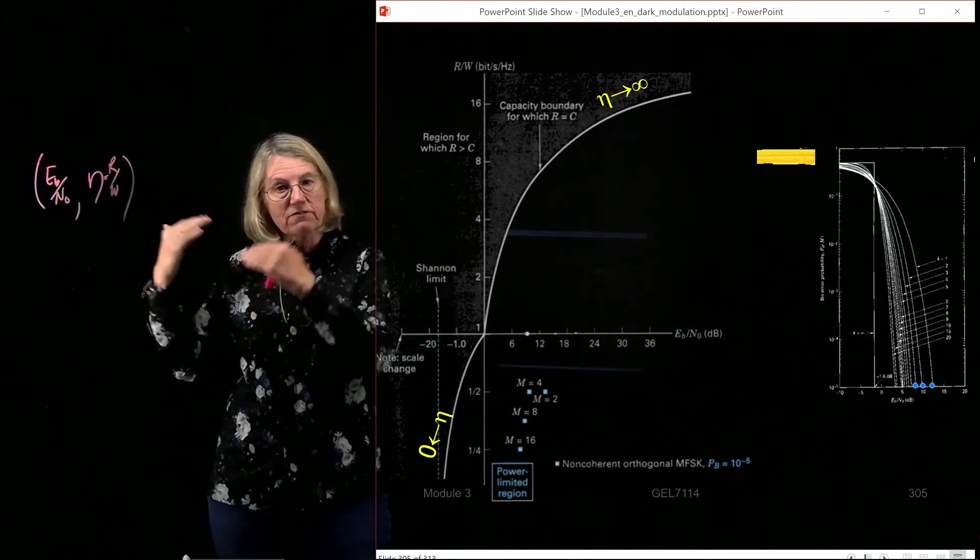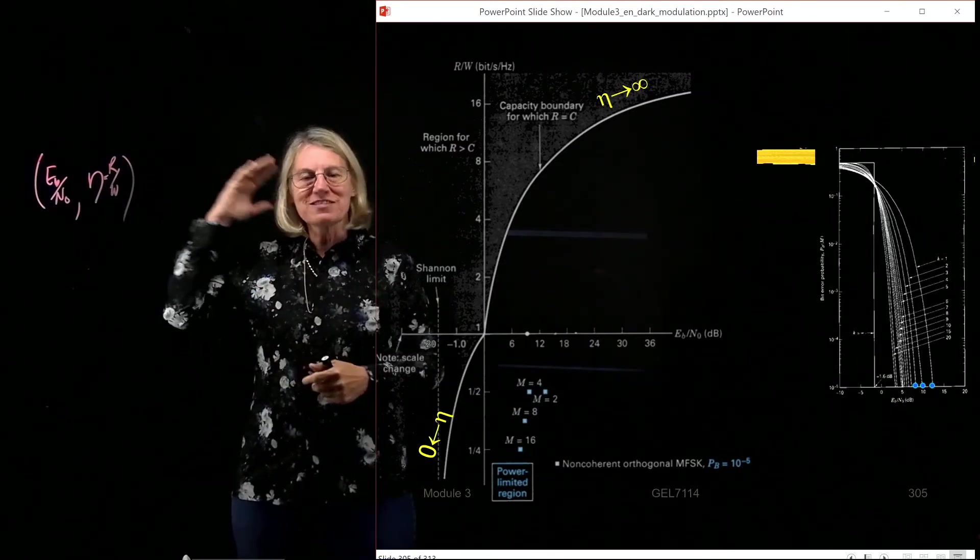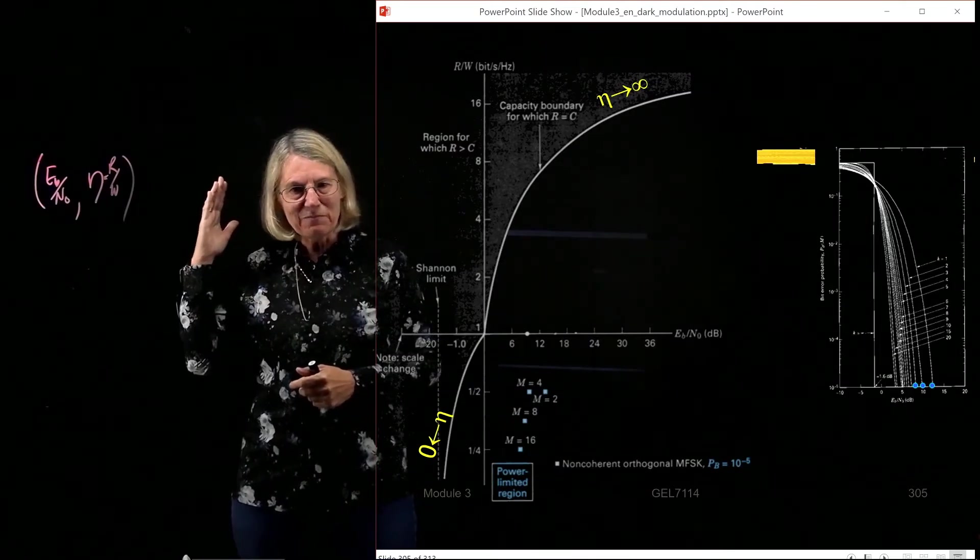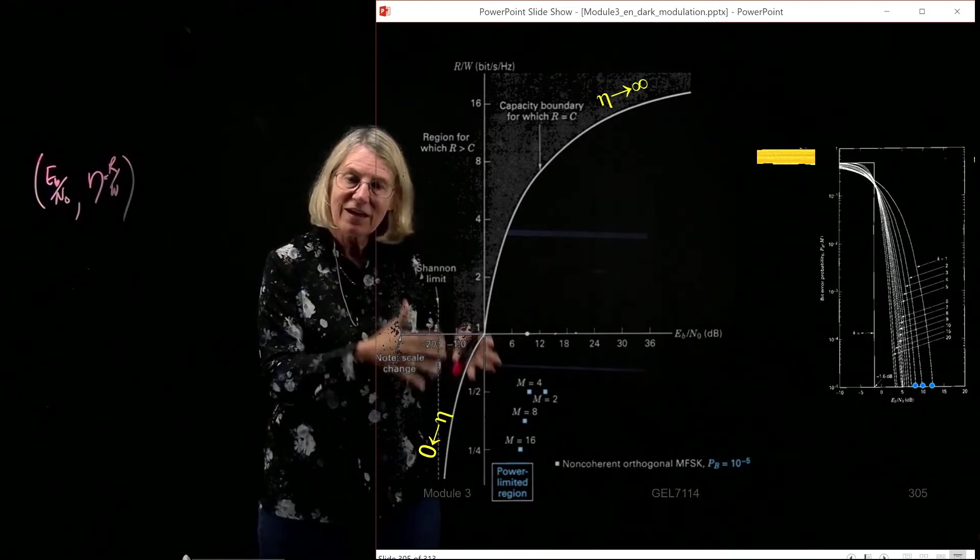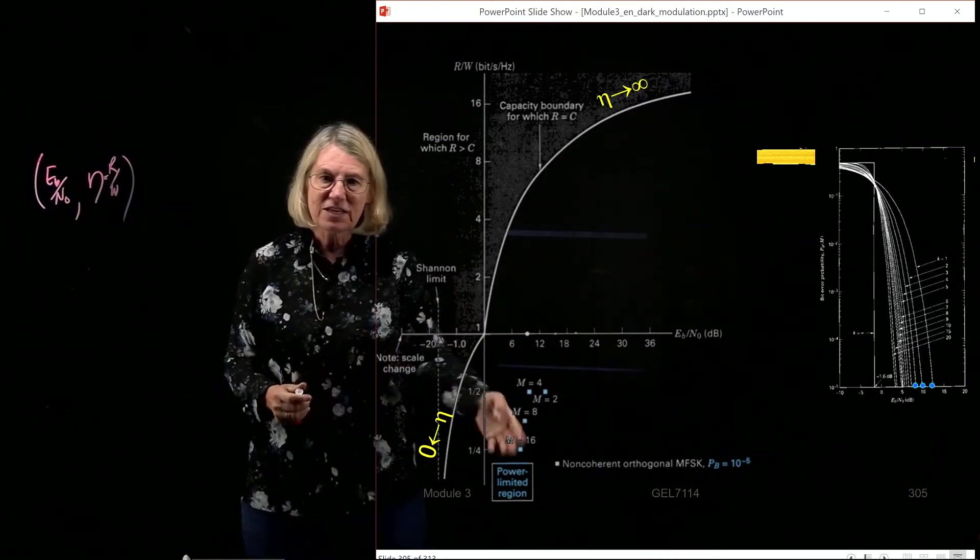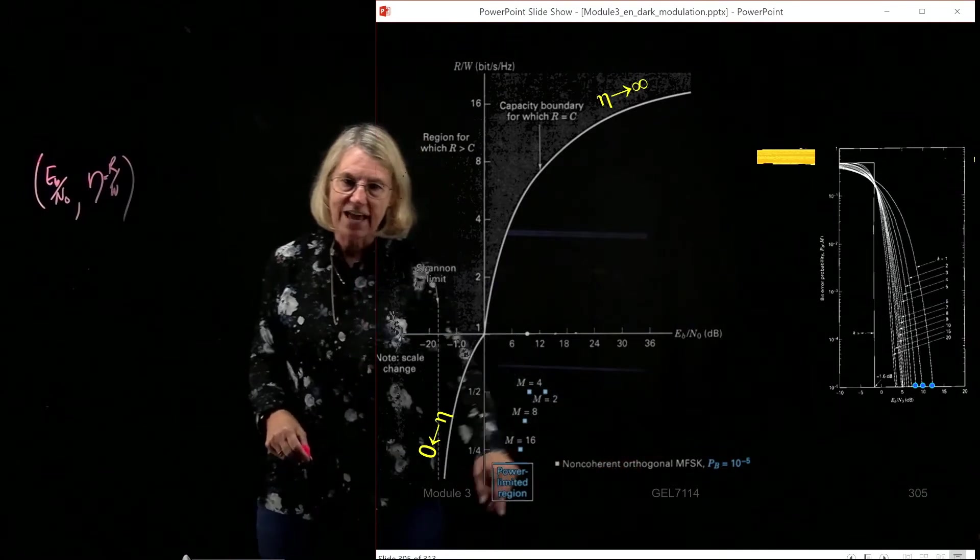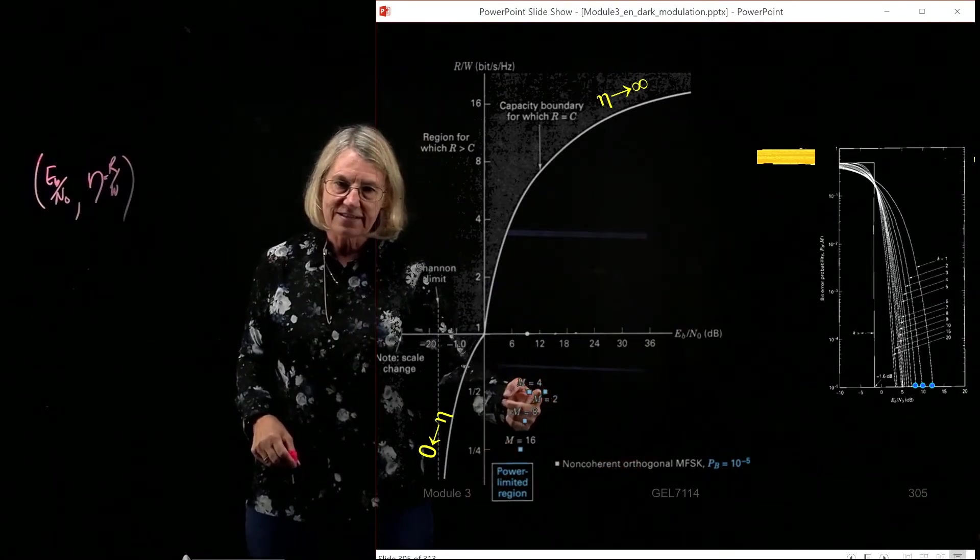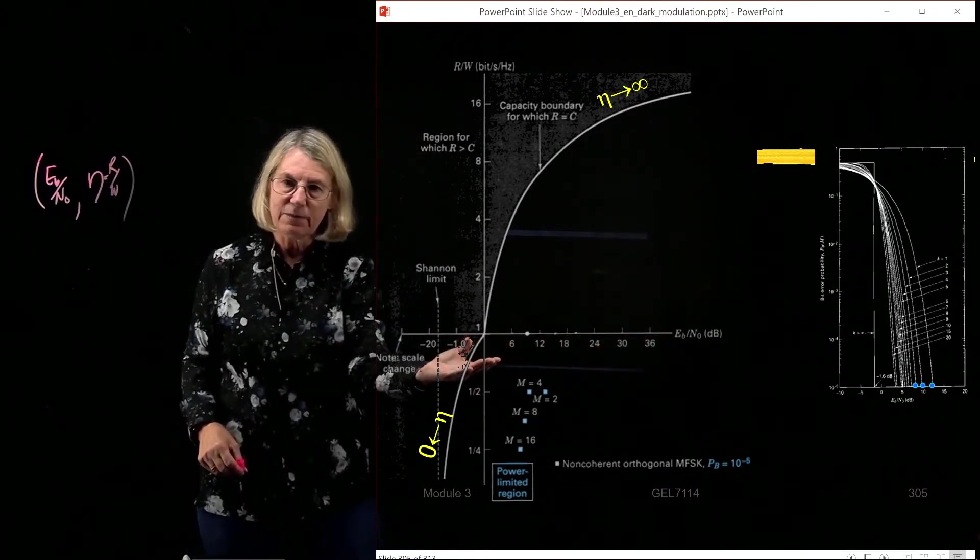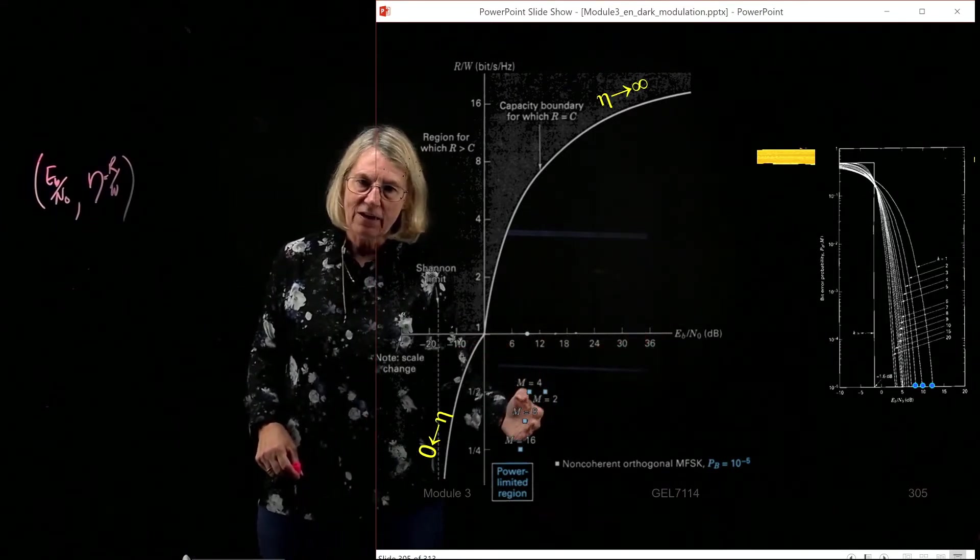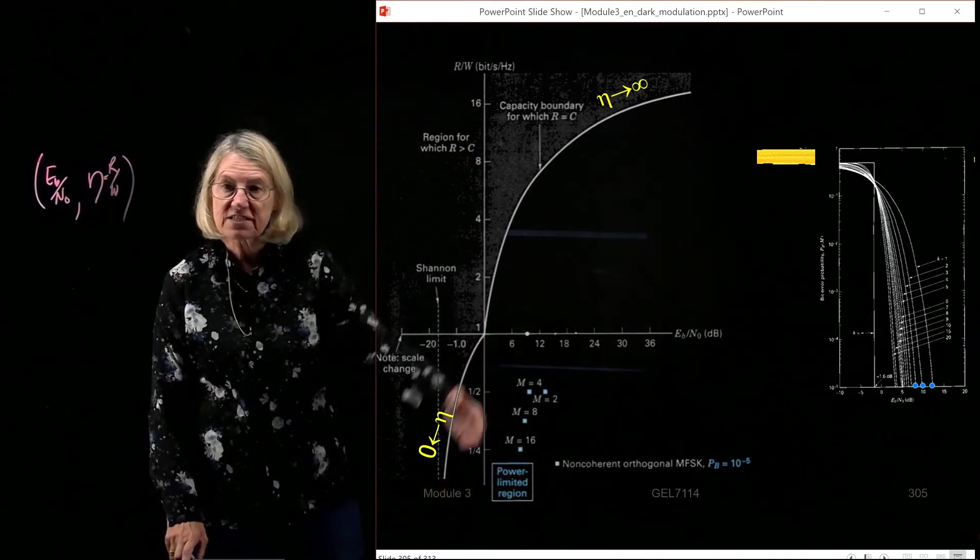That's a way for us to take those two quantities of information we had—one was the probability of error performance, one was the spectral efficiency performance—and be able to plot them on one plot. So these points here are the collection of points that refer to non-coherent FSK. And we can see that as it's getting larger, we know that we're getting less Eb over N0 required, and we also know that the spectral efficiency is going down. So this gives us that trend.